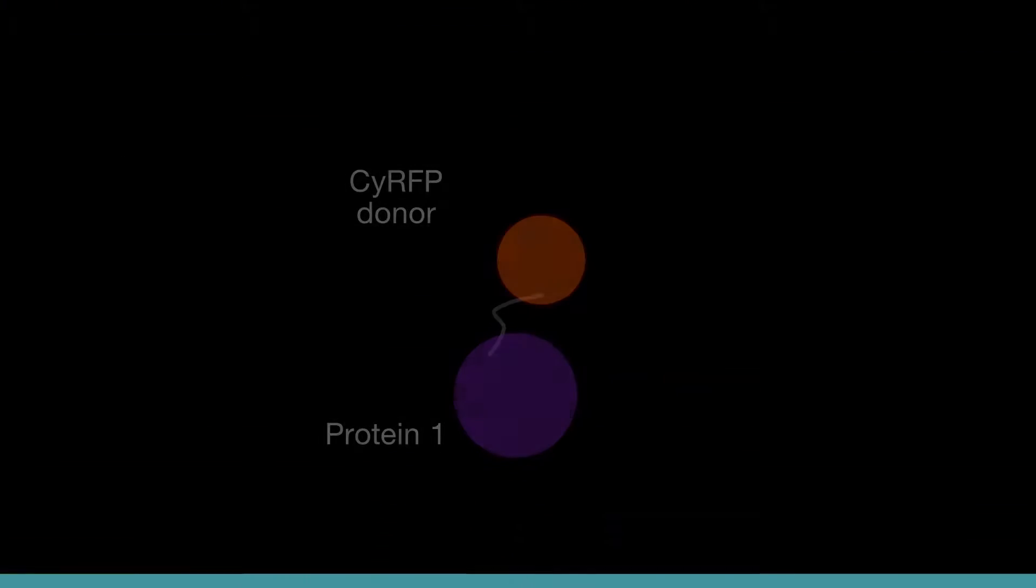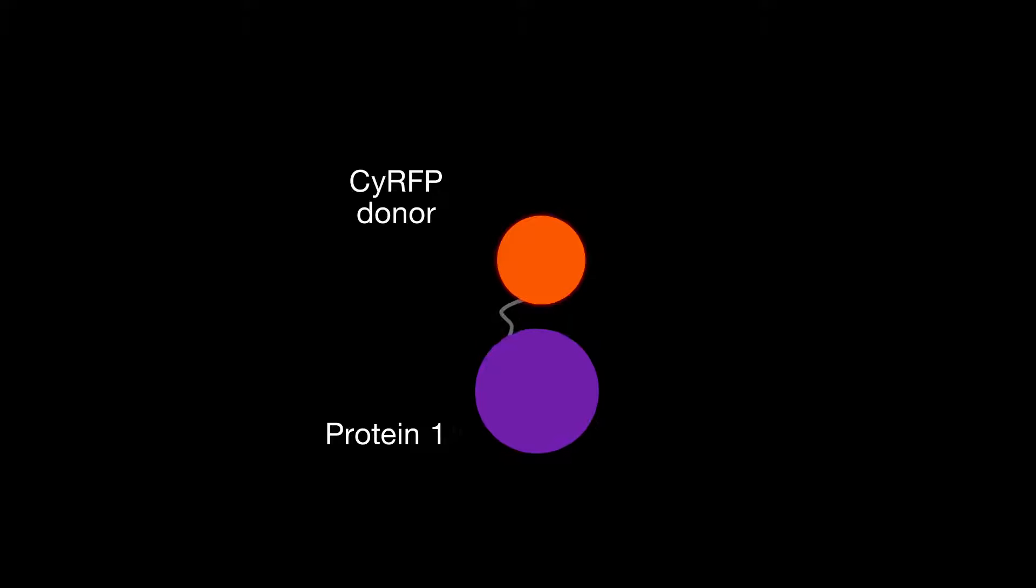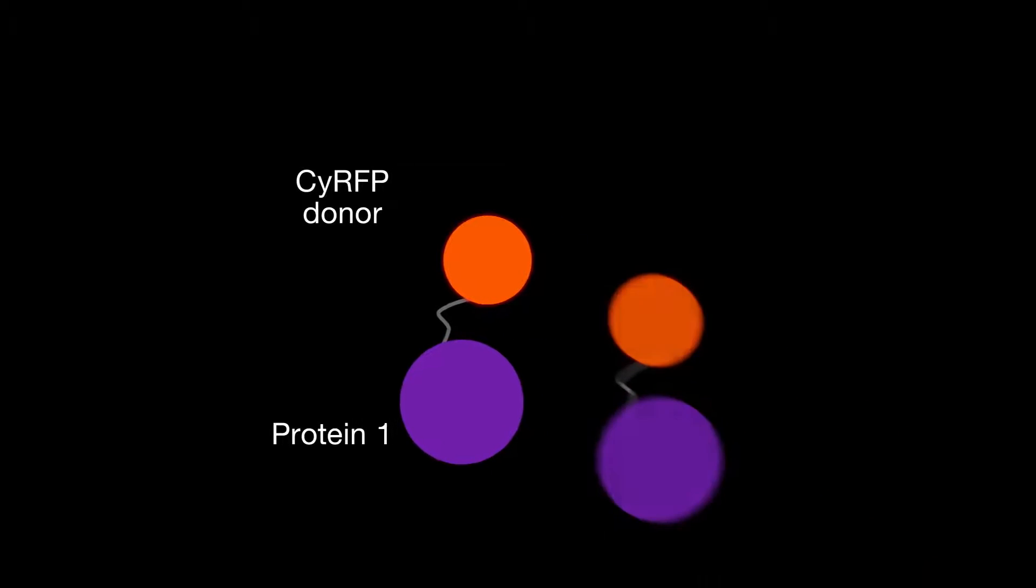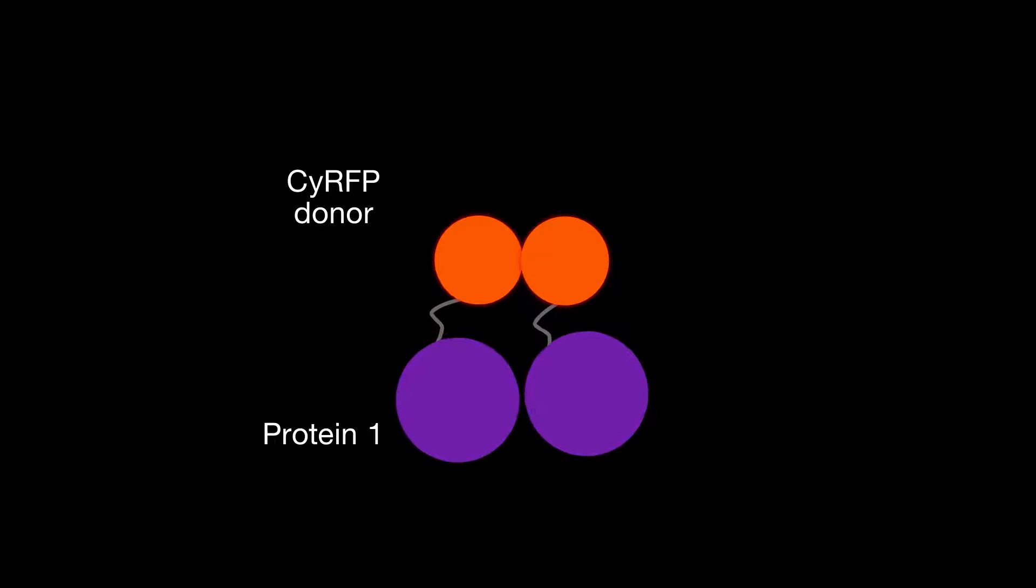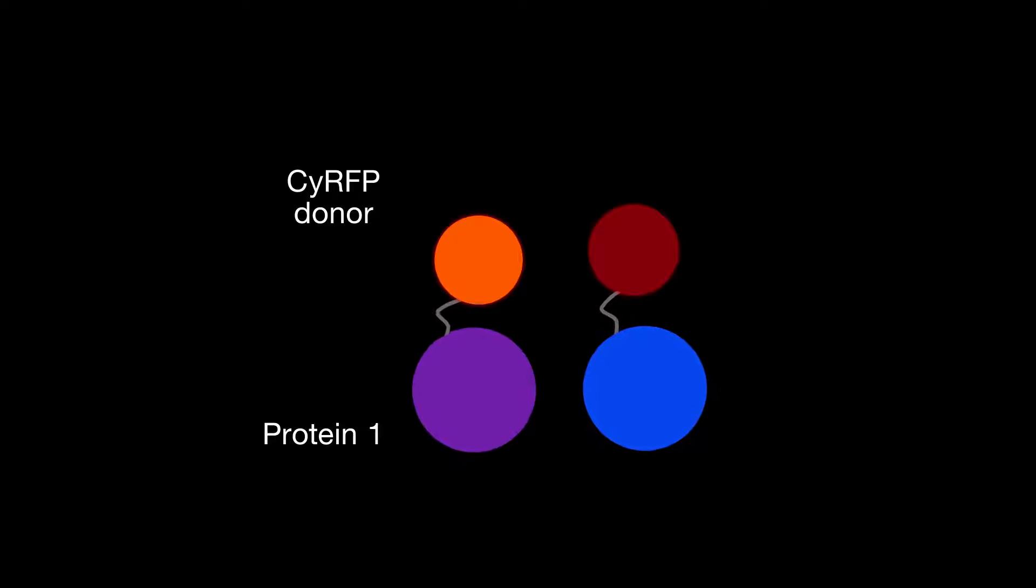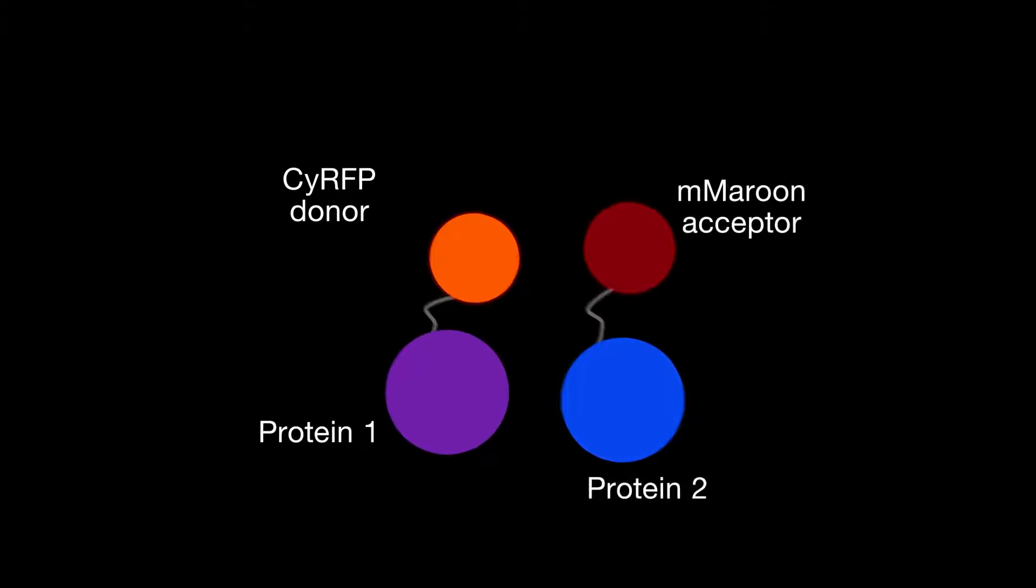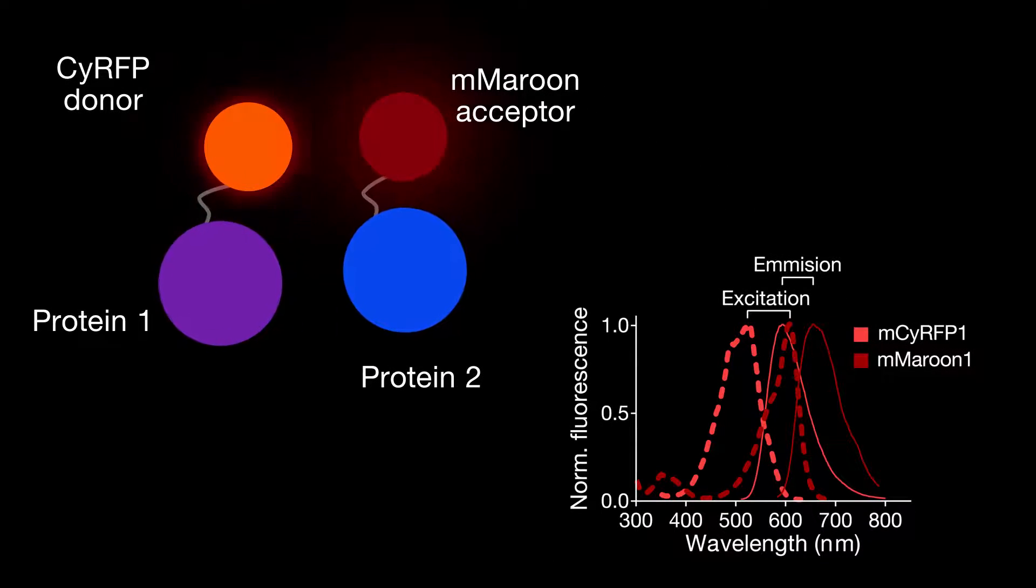The team created a red FRET donor by making other tweaks to CyRFP, including making sure it didn't dimerize. They then identified a far-red FRET acceptor named M. Maroon, which provided the highest FRET efficiency with the donor.